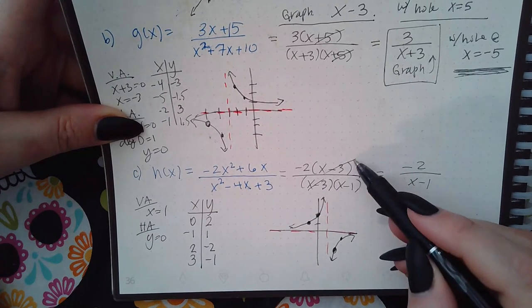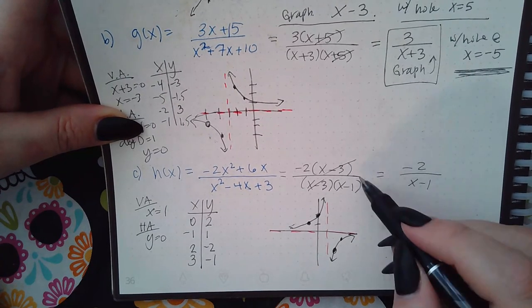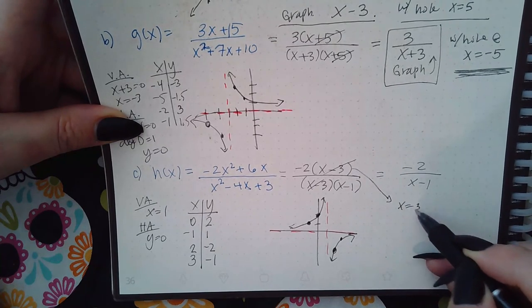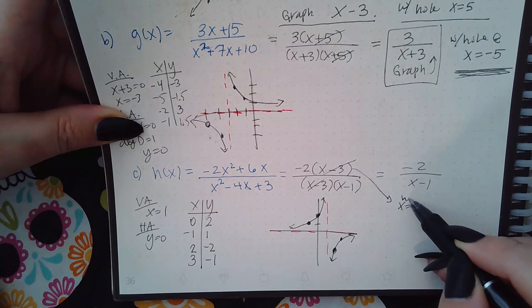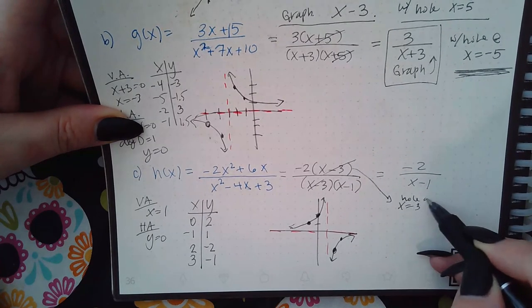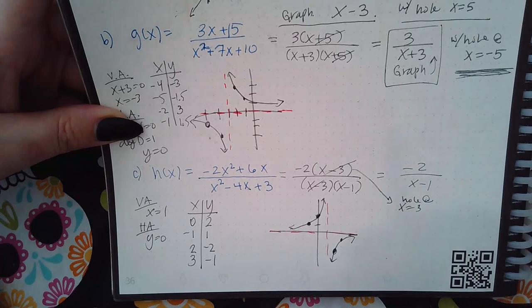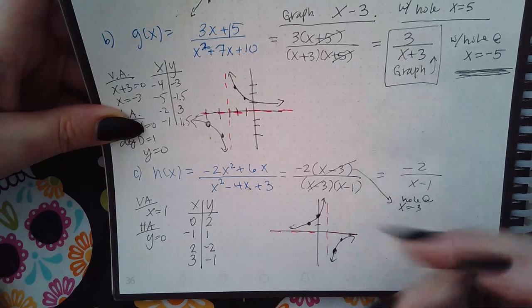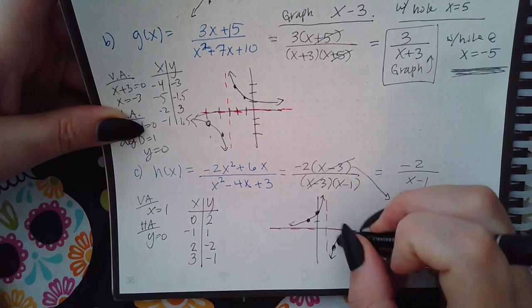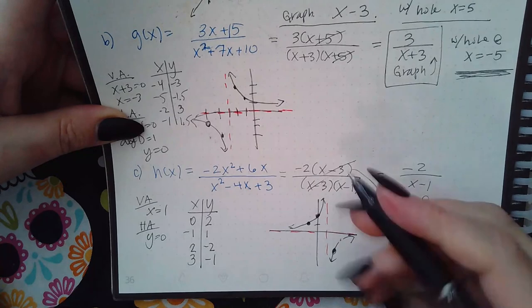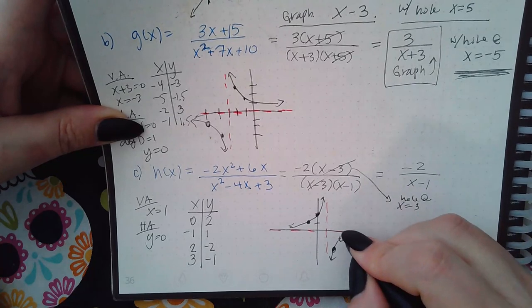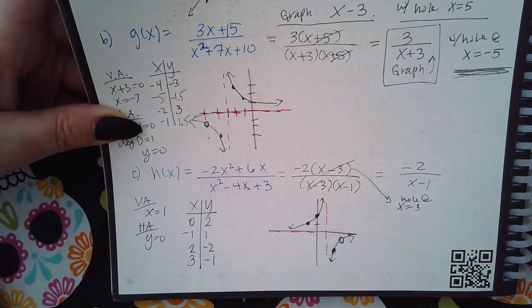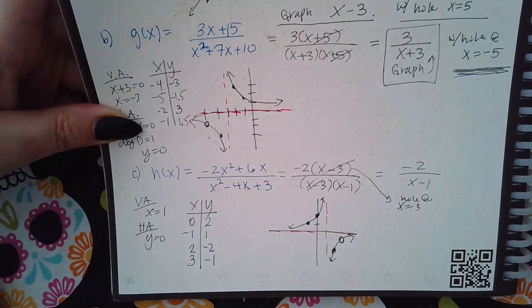Once you finish clicking the points it automatically draws the graph, but you have to remember to place the hole. The hole is where the cancelled factor equals zero — at x equals 3. Go to x equals 3, place the hole where it touches the graph, and the graph is complete.